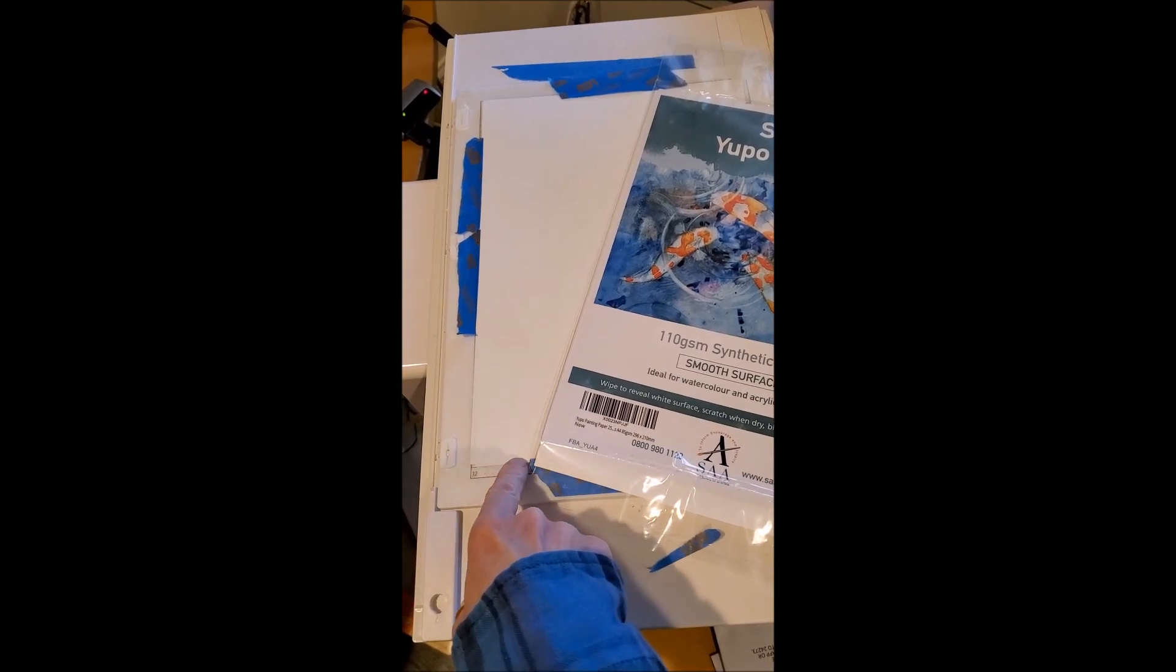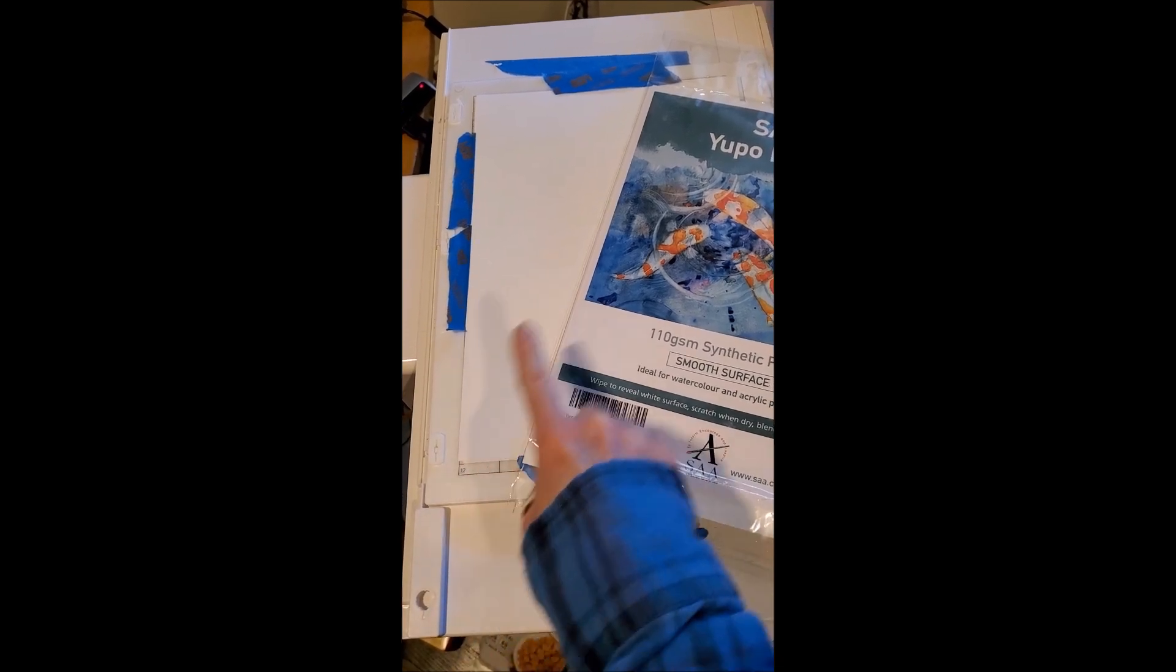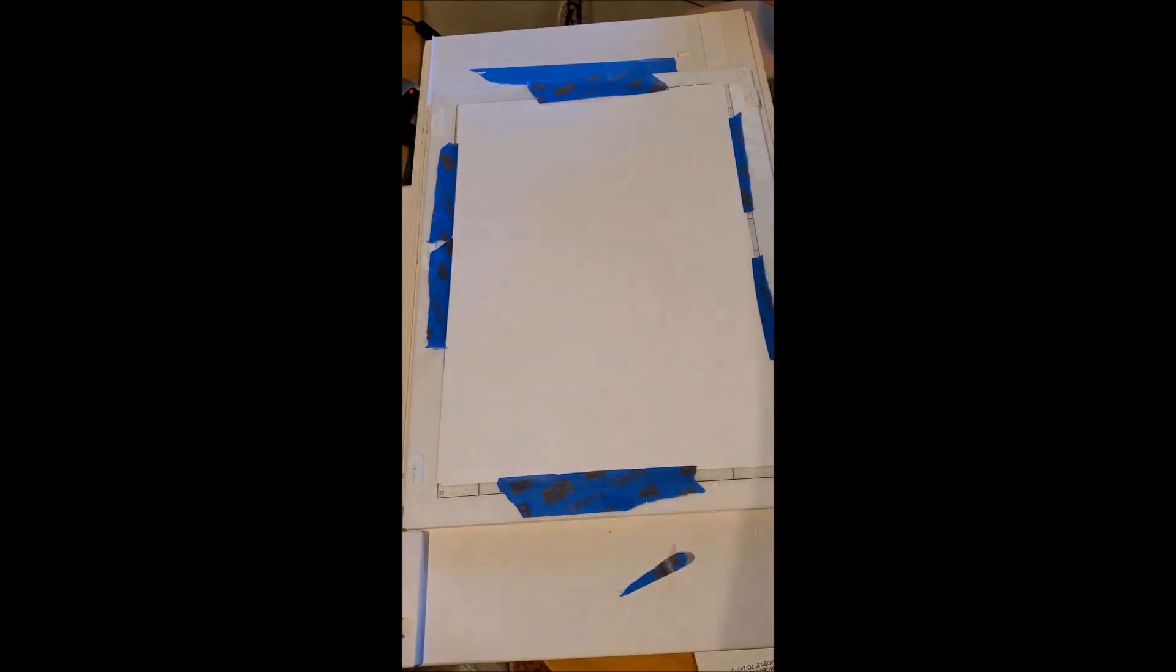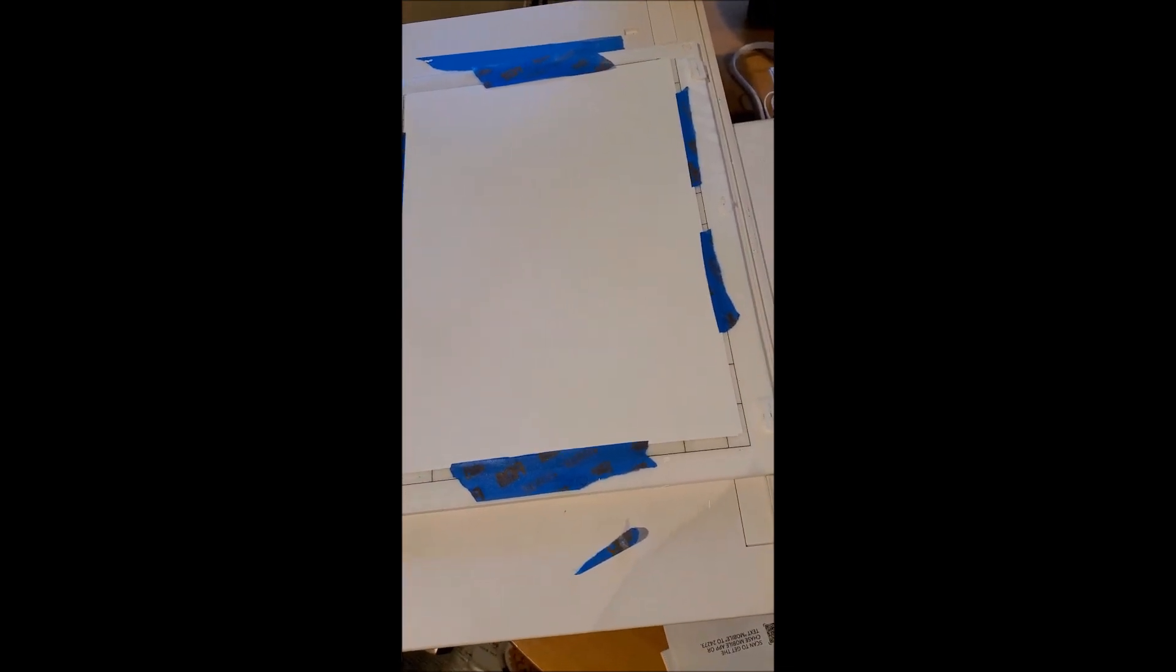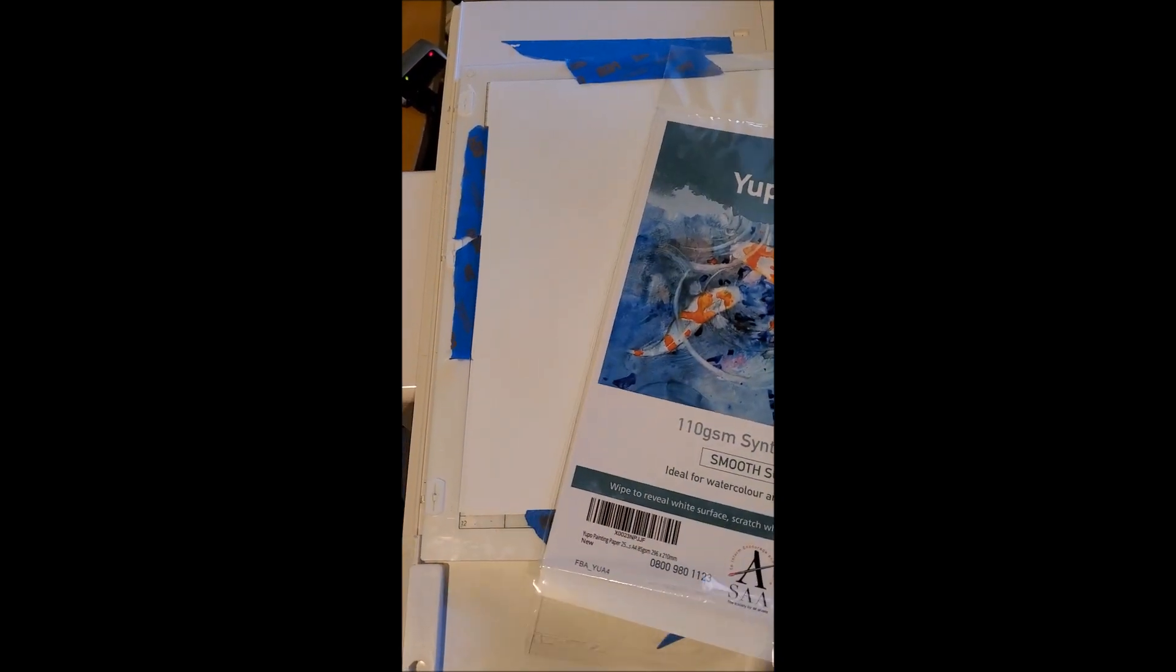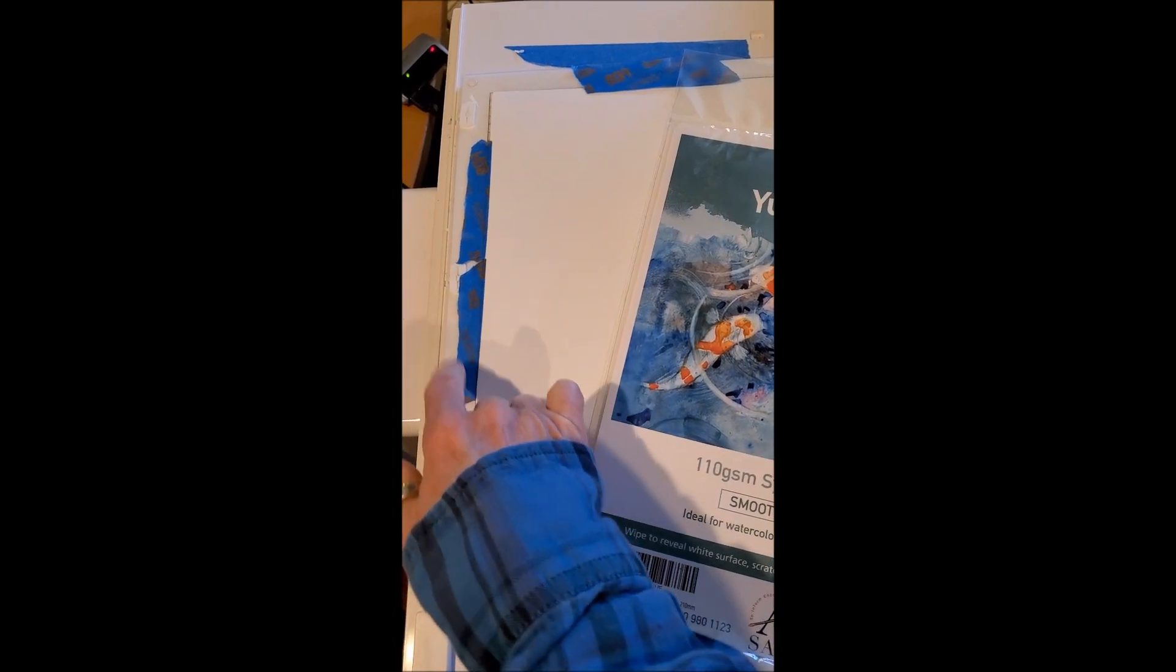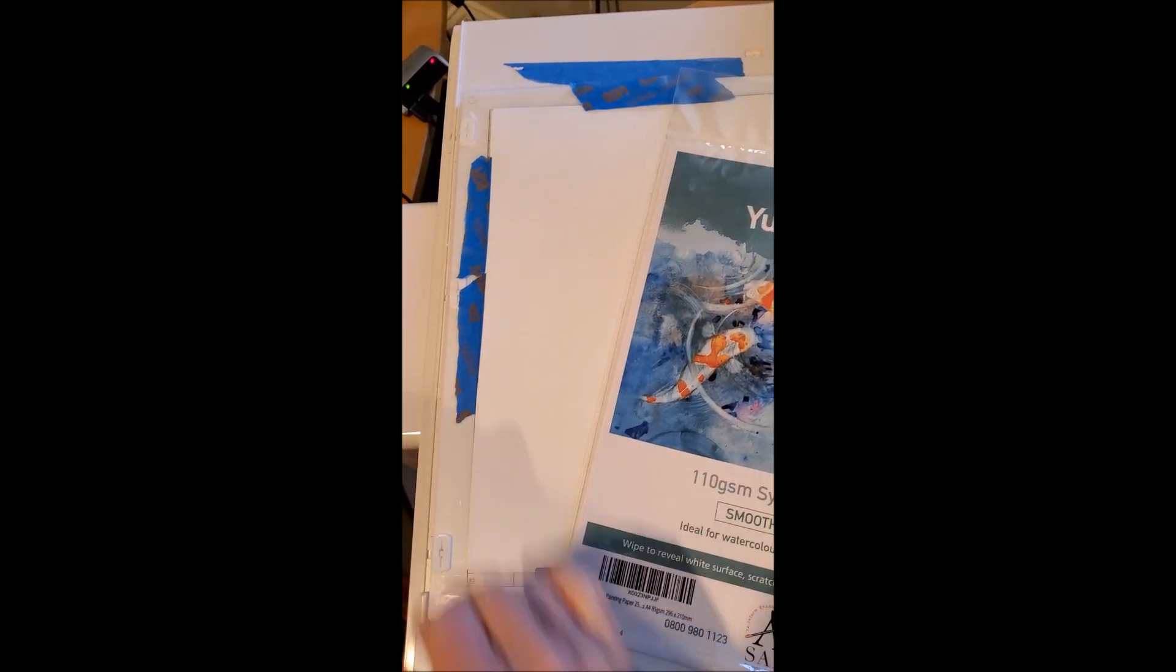I did notice though it's a different size. The regular Yupo paper will come all the way and fill the entire platform, but this is just shy width-wise and height-wise. Just to make sure that it's secure because it's kind of a slick paper, I use the blue painter's tape to hold it down.